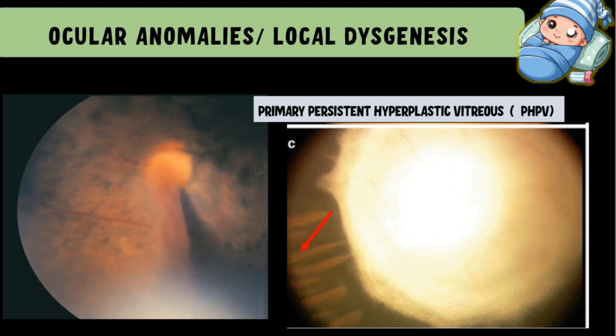This leads to development of a white membrane behind the lens, which can also lead to dense amblyopia. With time, the lens develops cataract as its nutrition is affected. Moreover, the fibrous membrane behind the posterior capsule undergoes contraction, pulling the ciliary processes — which are attached to the posterior lens capsule and equator — forwards toward the center, making them visible as shown by the red arrow in the second picture. PHPV is usually associated with a smaller eye, called microphthalmos.